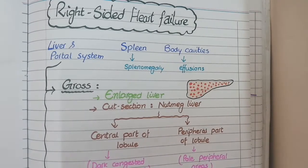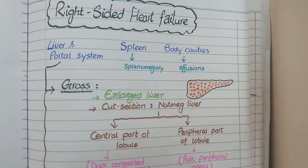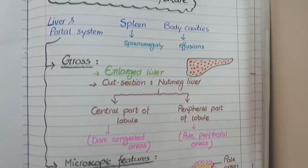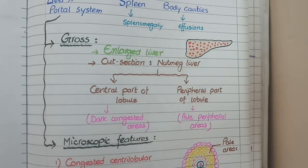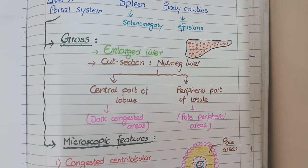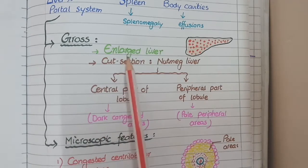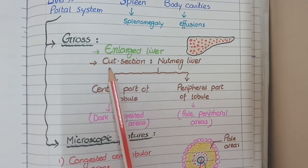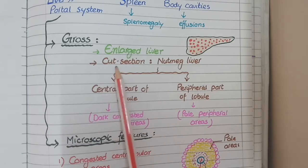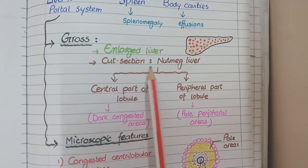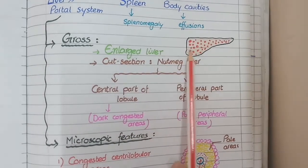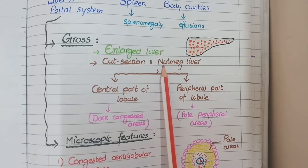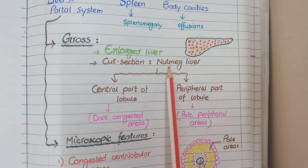The changes of right-sided heart failure that occur at the level of the liver are very characteristic and typical, so we will discuss these in detail. On gross specimen, the liver will be enlarged due to congestion, and if you see the cut section of the liver it will show a speckled appearance like the seed of a nutmeg. This appearance is called nutmeg liver.